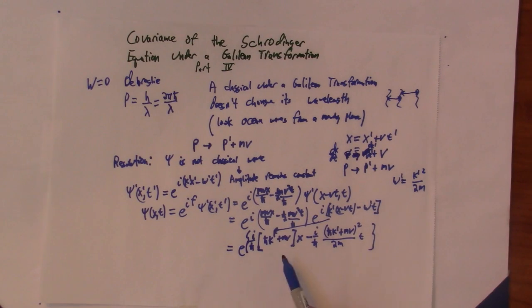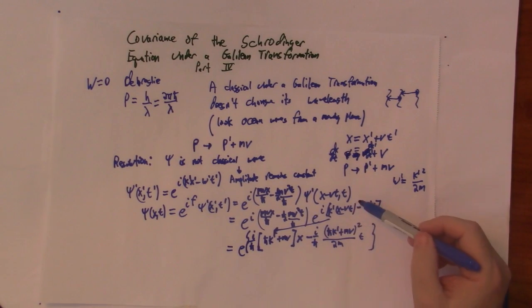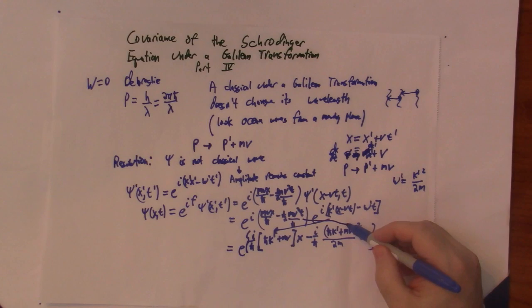And so the x terms there's h bar k prime x over there and h bars cancel out we get k prime times x which is right that gives us our x term and the other x term is mvx over h bar we have mvx over h bar all at the right side so that gives us the x terms.